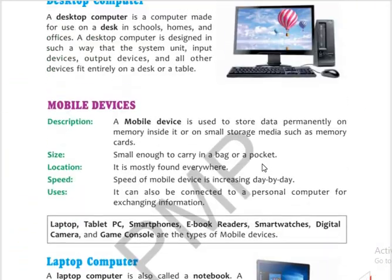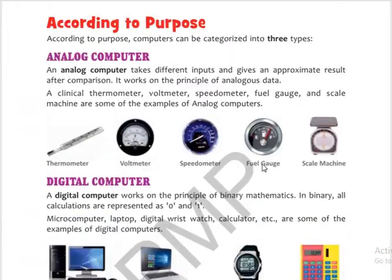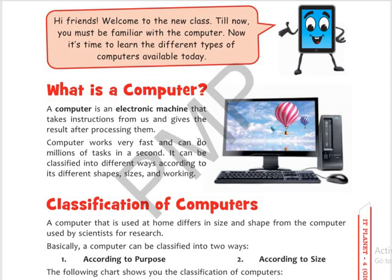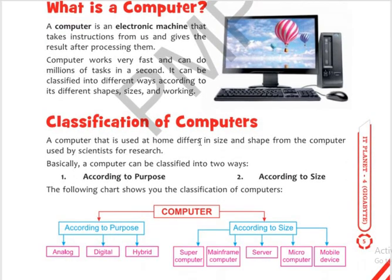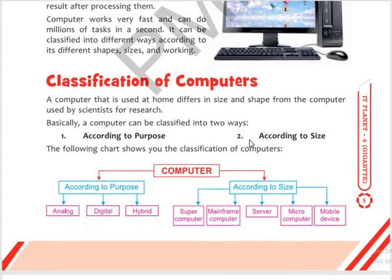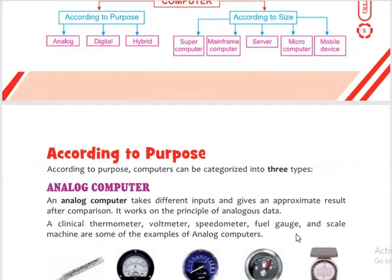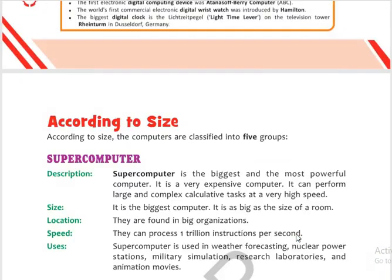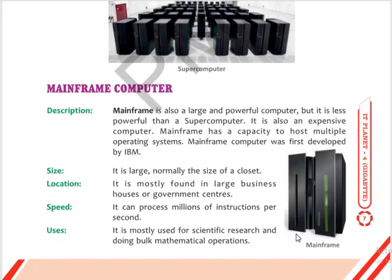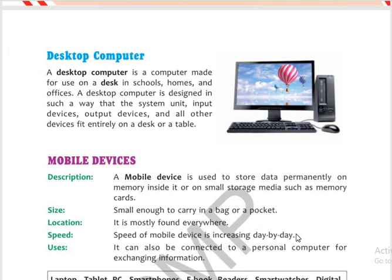Let's do a summary of this chapter. A computer is an electronic machine with keyboard, mouse, CPU, and monitor. Classification of computers has two types: according to purpose and according to size. According to purpose: analog, digital, and hybrid computers. According to size: supercomputer, mainframe computer, server, microcomputer, and mobile device. We covered the description, size, location, and speed of each type.